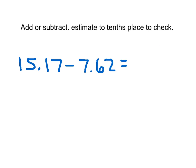Here I have this problem 15.17 minus 7.62. The instructions say to add or subtract and to estimate to the tenths place to check. So I'm going to rewrite this. I will rewrite it vertically. This means to figure out the exact answer as well, because I'm estimating to check my exact answer.